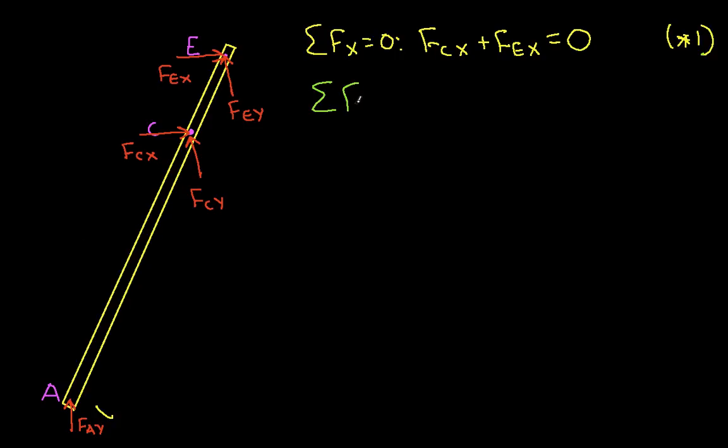We have the summation of the forces in the Y direction is equal to zero. This tells us that FAY, which we do know already, plus FCY plus FEY is equal to zero. We can't solve for anything there, so we'll just call this star two.